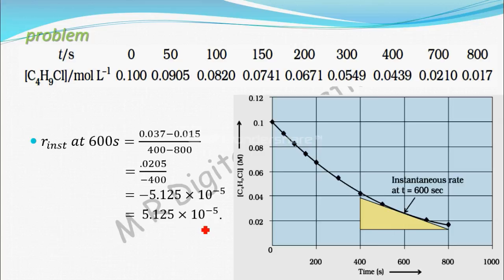The key thing to know is you can calculate instantaneous rate by drawing a concentration versus time graph. At a particular time, construct a tangent and the slope of the tangent will give the instantaneous rate at that point.